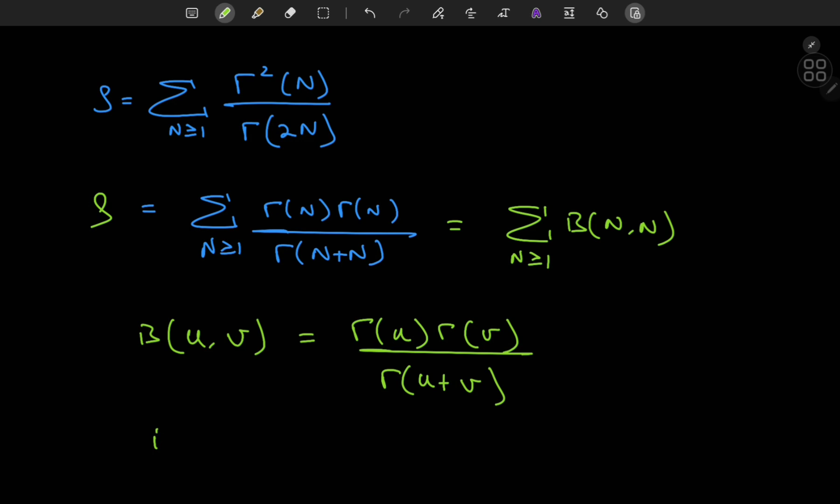Now building on this beta function approach, we can use the integral representation of the beta function. So beta u v equals the integral from 0 to 1 of x to the u minus 1 times 1 minus x to the v minus 1 dx.